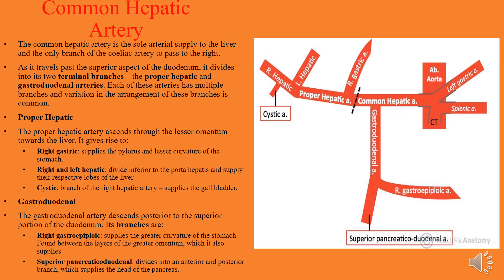The gastroduodenal artery passes posteriorly to the superior portion of the duodenum, going to the superior portion of the duodenum and divides into anterior and posterior branches.